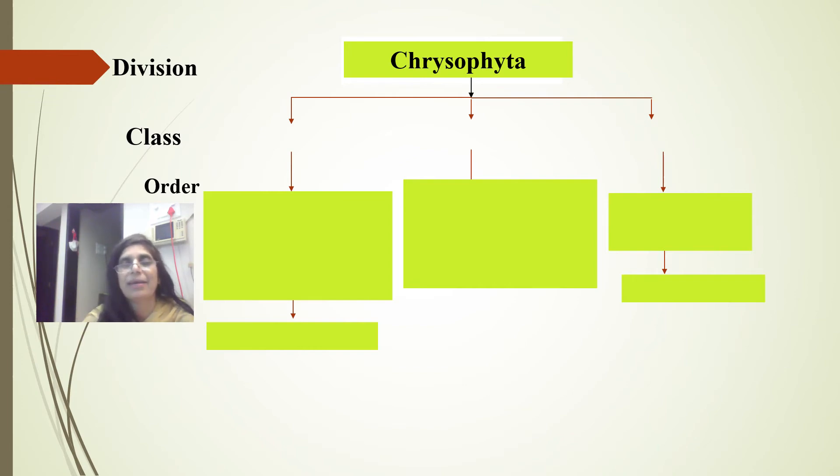Beta-carotene is present in all the classes, and it has various types of xanthophylls. In some, one xanthophyll is present; in others, different types of xanthophylls are present. That's why they impart different coloration to different groups.